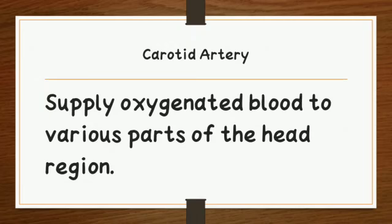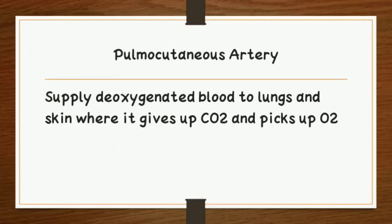The pulmocutaneous arteries supply deoxygenated blood to the lungs and the skin, where carbon dioxide is released and oxygen is picked up.